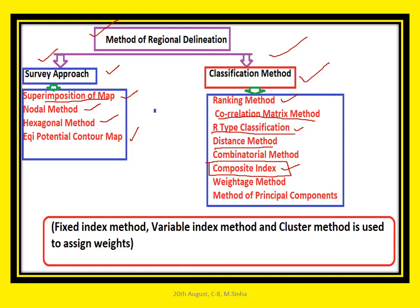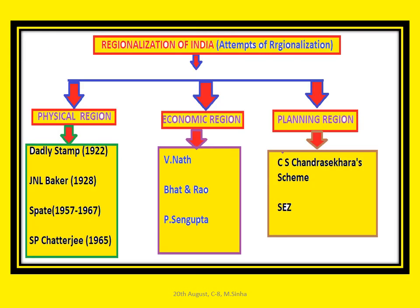Delineating any region depends on the objective and specific purpose or by straightforward government order. Now, the regionalization of India — or better, the attempt at regionalization of India — is basically segmented into three parts: first is the physical region, second is the economic region, and third is the planning region.